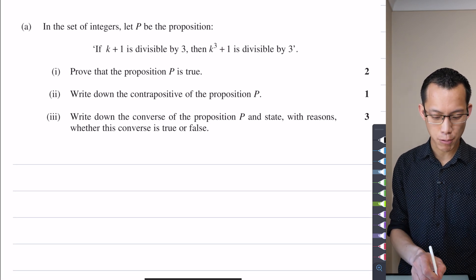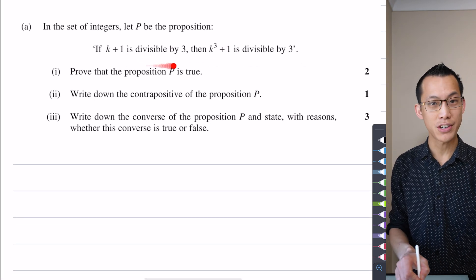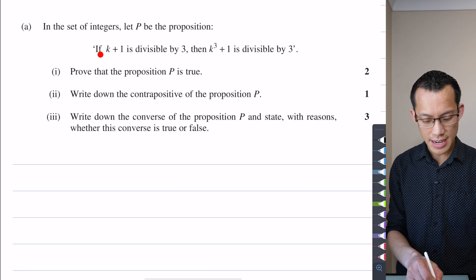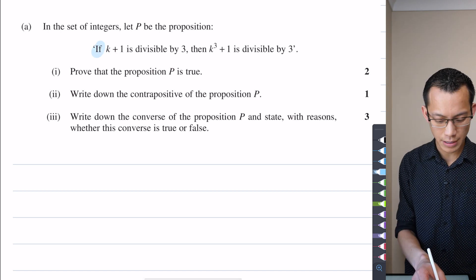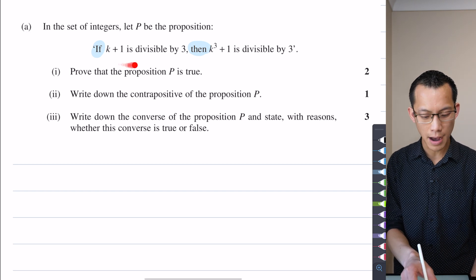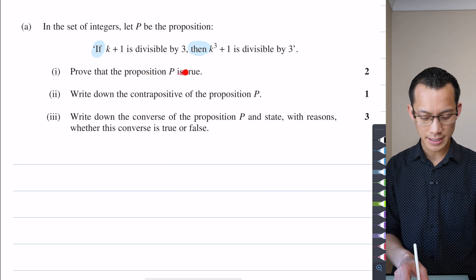In the set of integers, let P be the proposition. You've got this sort of structure in here, right? You've got an if-then statement, so that's pretty normal. And you've got this first part, which is what we like to call the antecedent.